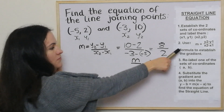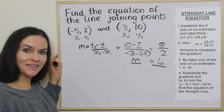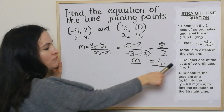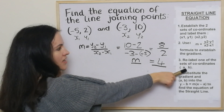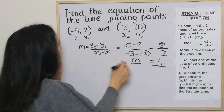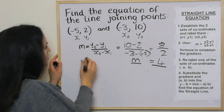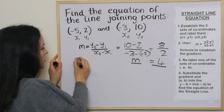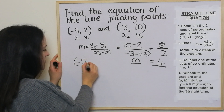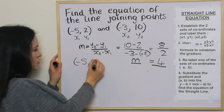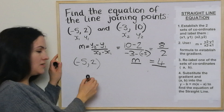That's step 2 done. We're now on to step 3 where we relabel one of the sets of coordinates a and b. I'm going to go with this one here: negative 5, 2, and I'll just label it a, b.